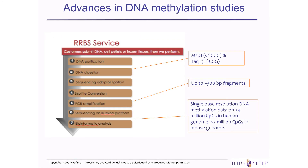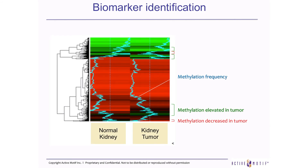For DNA methylation studies, we perform RRBS as a service. This is a straightforward protocol focusing on identifying differential methylation profiles at CpG islands. We use specific enzymes that cut inside CpG islands and then profile only CpG island differential methylation. Here I show an example using tumor kidney to identify biomarkers — comparing normal kidney to tumor kidney — and we can very nicely identify differential methylation profiles and potential biomarkers. A similar approach applies when focusing on aging effects.